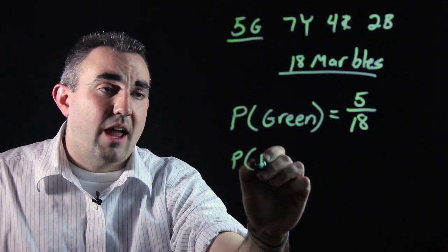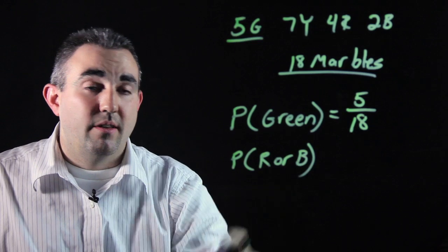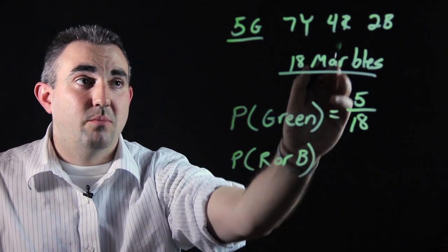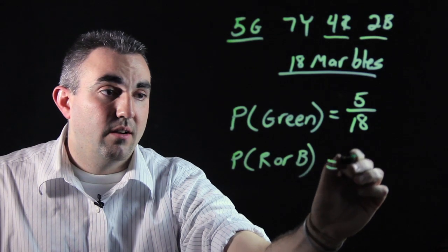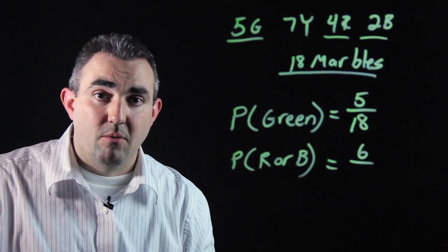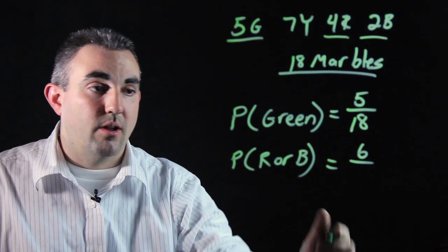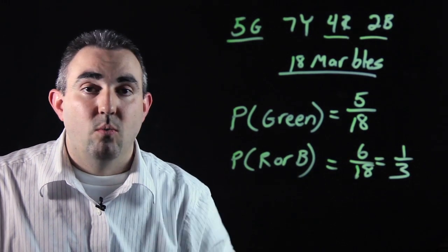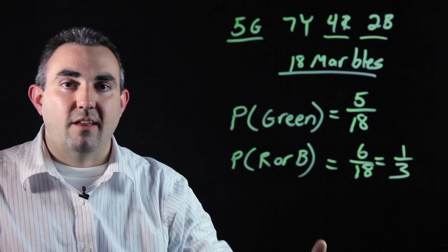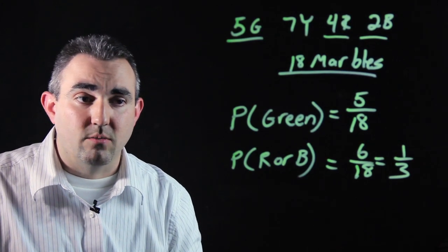Probability of choosing a red or blue marble. You need to find the red and blue marbles and put them together. We have four red, two blue, all together. We have six marbles to choose from out of the total number, which is eighteen, which can be reduced to one-third, which can be turned into a decimal or a percent, again, depending on what you're being asked to do.